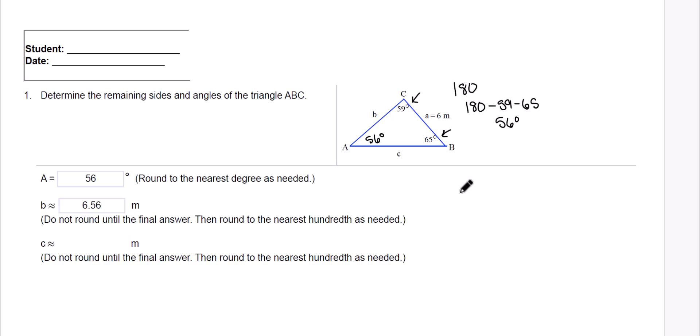We want to find side C. We're still going to use the law of sines for this one, but I'm going to give you a little bit of a tip here. I wouldn't use angle 65 and side B, which is 6.56 approximately. Because we had to figure that one out.